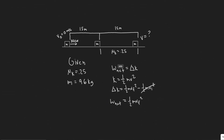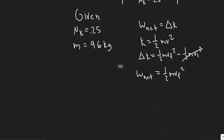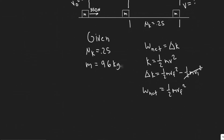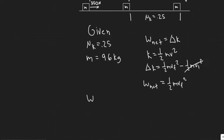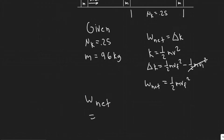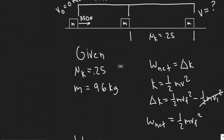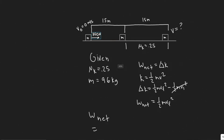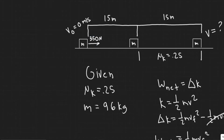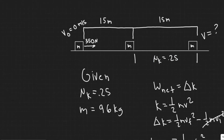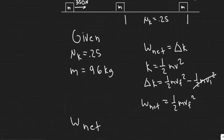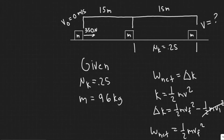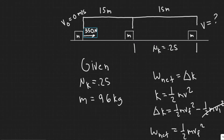Now we need to find the net work. We're going to do this by adding up the work done by the different forces. We have to add up the work done by the applied pulling force, and then also the work done by the friction force, since net work is just the total work added up.